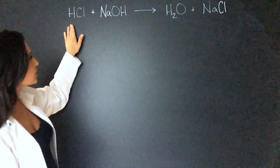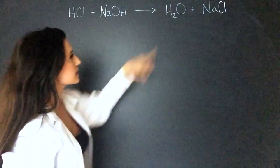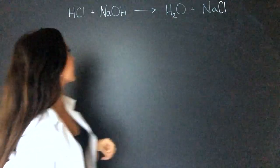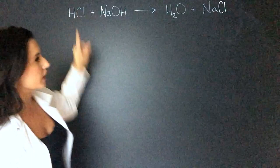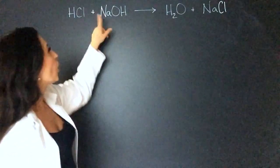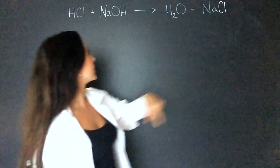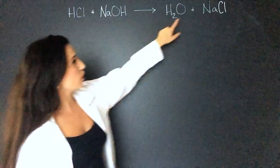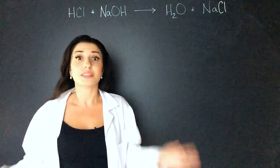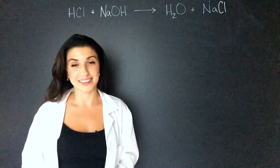So the hydrogen, we have two hydrogen on the reactants and two hydrogen in the products. We have one chlorine, one chlorine, one sodium, one sodium, one oxygen, one oxygen, and we already did hydrogen. So luckily, this equation is already balanced.